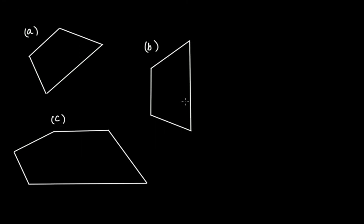In this figure again, you have a quadrilateral because it has four sides, and this pair of opposite sides is parallel, but this pair of opposite sides is not parallel — that makes it a trapezium.